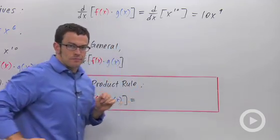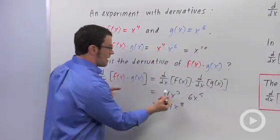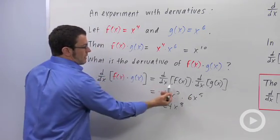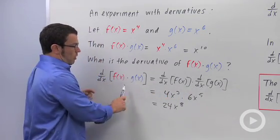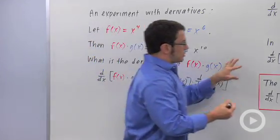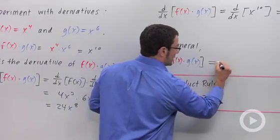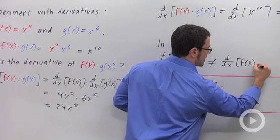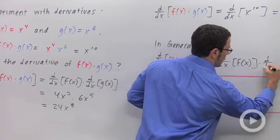What went wrong? This is what went wrong. This statement's not true. So that's very important. When you take the derivative of a product, it does not equal the product of the derivatives. In general, the derivative of a product is not the derivative of f of x times the derivative of g of x.